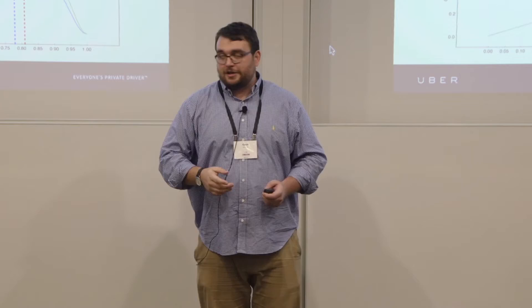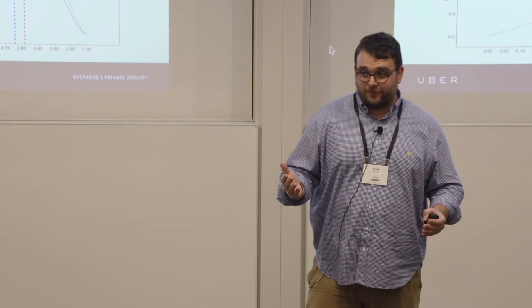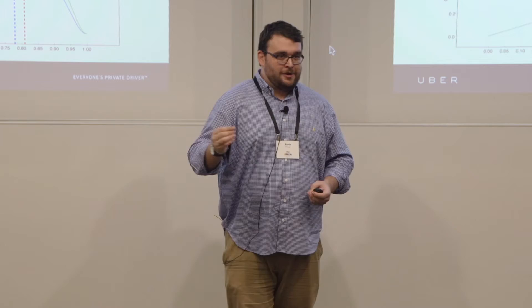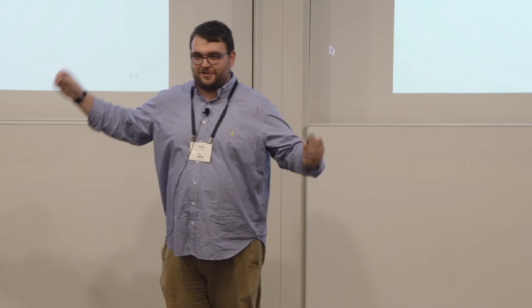What that looks like on the ETAs chart is that drivers make 5% more money with Geosurge, and that has nothing to do with extra revenues. That's just about helping them position themselves better to access more trips when we're at a higher rate of utilization.